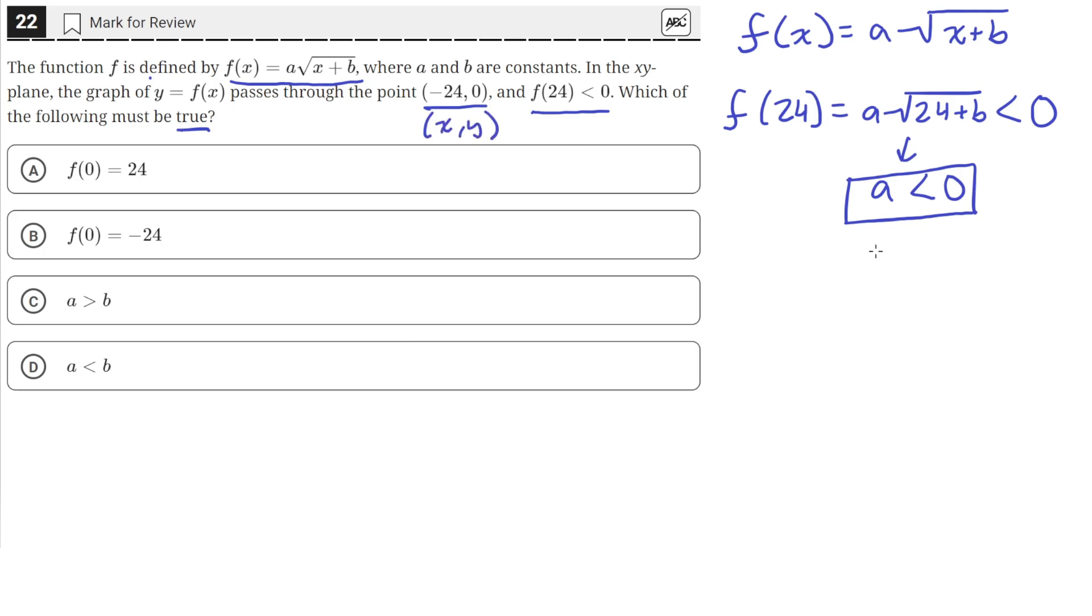These are x, y coordinates. Let's plug these in for x and y. So f(x) becomes a√(-24+b) = 0.